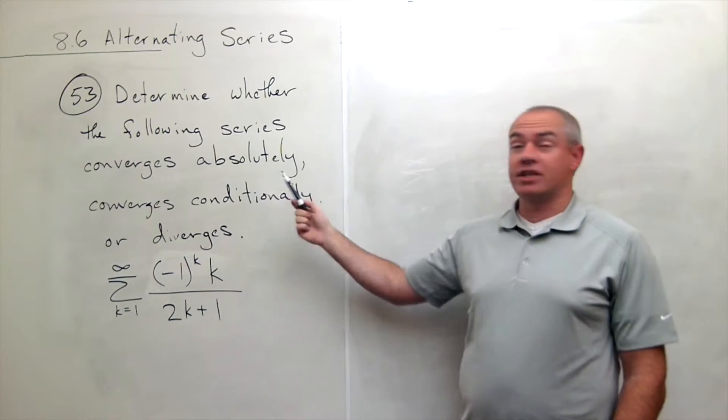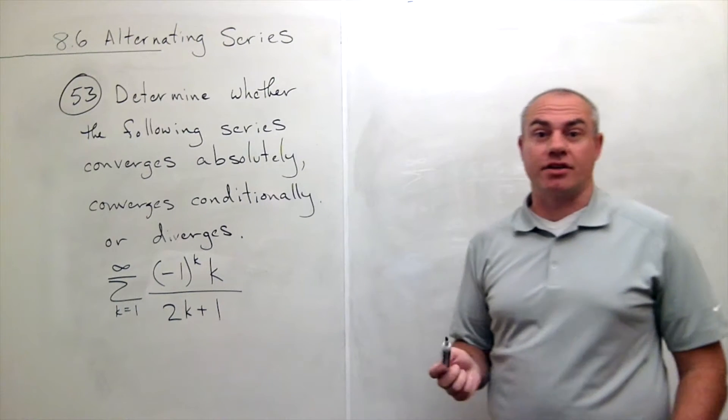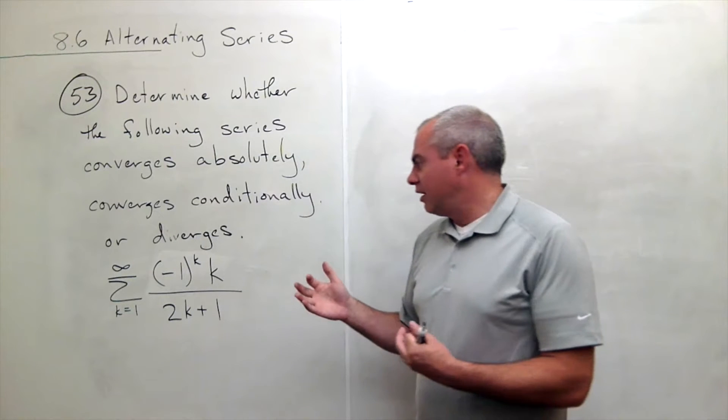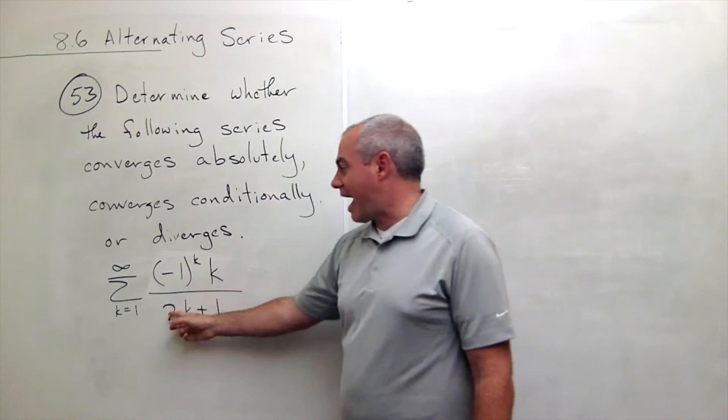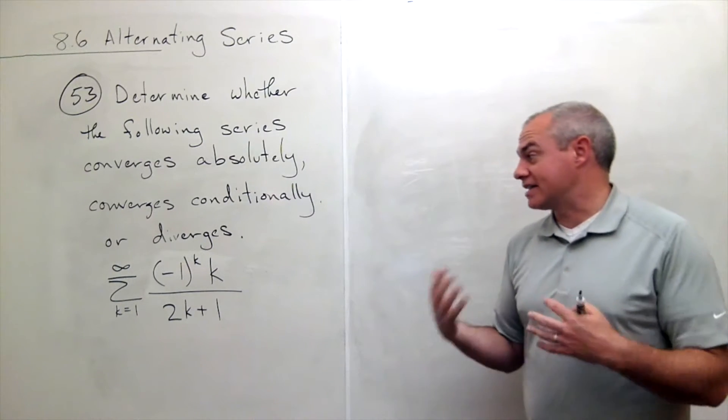But what I'm going to do then is just jump straight to, does it even converge conditionally? And so I'm going to use an alternating series test on this guy just to start right out. Because I look at it and I'm thinking, I don't think this thing converges at all, because it kind of acts like adding up halves as k gets big.